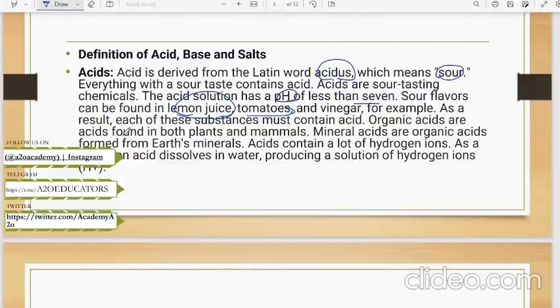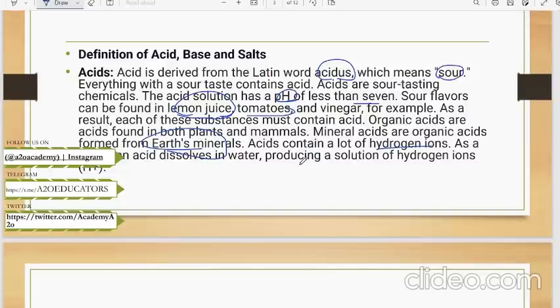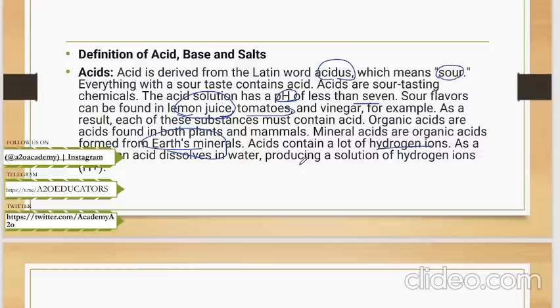Organic acids are acids found in both plants and mammals. Mineral acids are inorganic acids from earth's minerals. Mineral acids contain a lot of hydrogen ions and the amount of hydrogen ions released when an acid reacts with water tells us how strong that acid is.